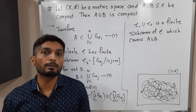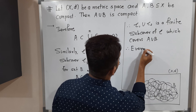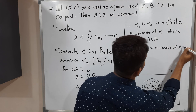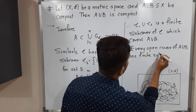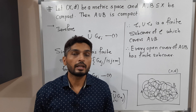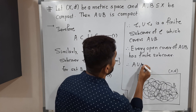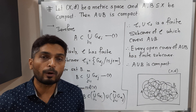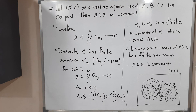Therefore, every open cover of A∪B has a finite subcover. By the definition of a compact set, this means A∪B is compact. In this way, we proved that if we have two compact sets, their union is also compact. The proof is complete.